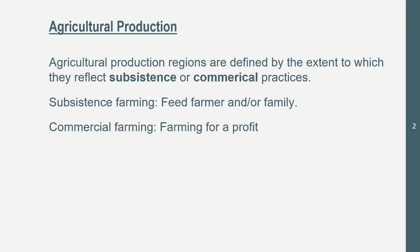Agricultural production regions are defined by the extent to which they reflect subsistence or commercial practices. Subsistence farming is usually for feeding the farmer or their family, while commercial farming is usually for a profit — they're going to see a high surplus of goods, unlike subsistence farming. These regions are defined by the extent that they practice these two types of farming.